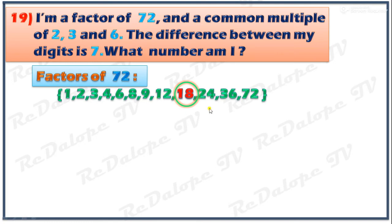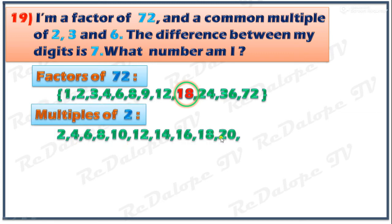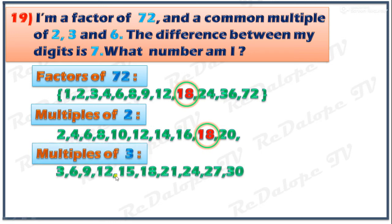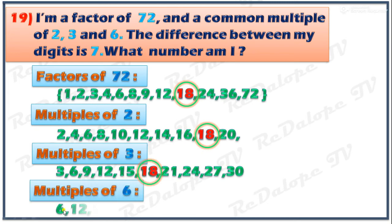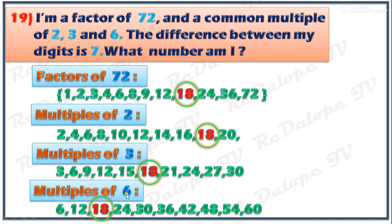For example, 2 minus 1 is 1; 4 minus 2 is 2; 6 minus 3 is 3; 7 minus 2 is 5. So the answer is 18. To confirm, we check the multiples of 2, 3, and 6: 18 appears in the multiples of 2, the multiples of 3, and the multiples of 6. Therefore, 18 is the final answer.